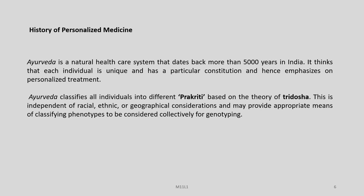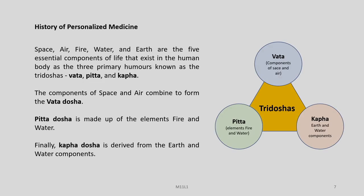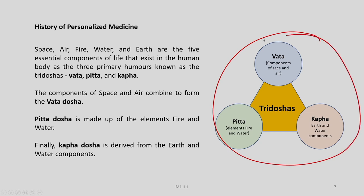This is independent of racial, ethnical, or geographical considerations and may provide appropriate means of classifying phenotypes to be considered collectively for genotyping. Space, air, fire, water, and earth are the five essential components or elements of life as laid out in Ayurveda that exist in the human body as the three primary humors known as the Tridosha: Vata, Pitta, and Kapha. There is interaction between the three. The components of space and air combine to form the Vata dosha. The Pitta dosha is made up of the elements of fire and water.